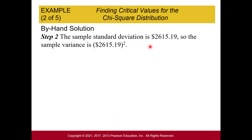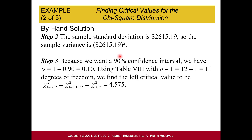The sample standard deviation is $2,615.19. The variance is just that value squared. Because we want a 90% confidence interval, alpha equals 1 minus 0.9, which is 0.10. We need 12 minus 1, so 11 degrees of freedom. For the left critical value: 1 minus alpha over 2 equals 1 minus 0.1 divided by 2, which is 0.95, giving us a chi-squared value of 4.575.